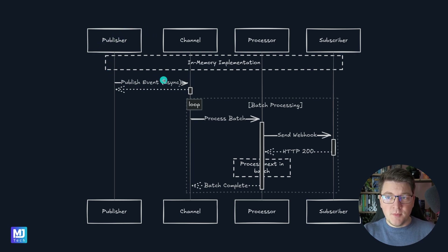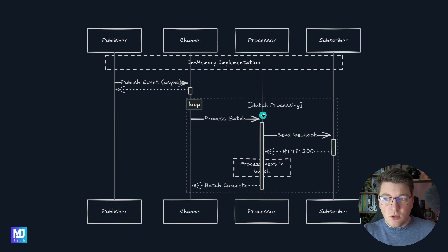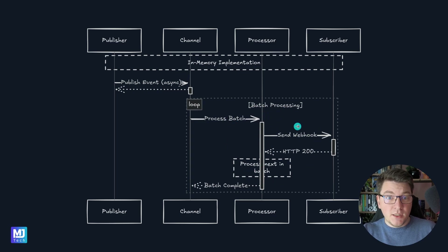We have our webhook publisher publishing some events — let's say an order was created — and this event was published to an in-memory channel so the publisher can complete immediately and return control back to the caller. In the background we had a webhook processor component which was a background service, listening for messages on our in-memory channel. Every time a message would come in, it would process all of the subscribers for a given event in a batch and send all of them a webhook one by one. And this is exactly where our bottleneck is in the current implementation.